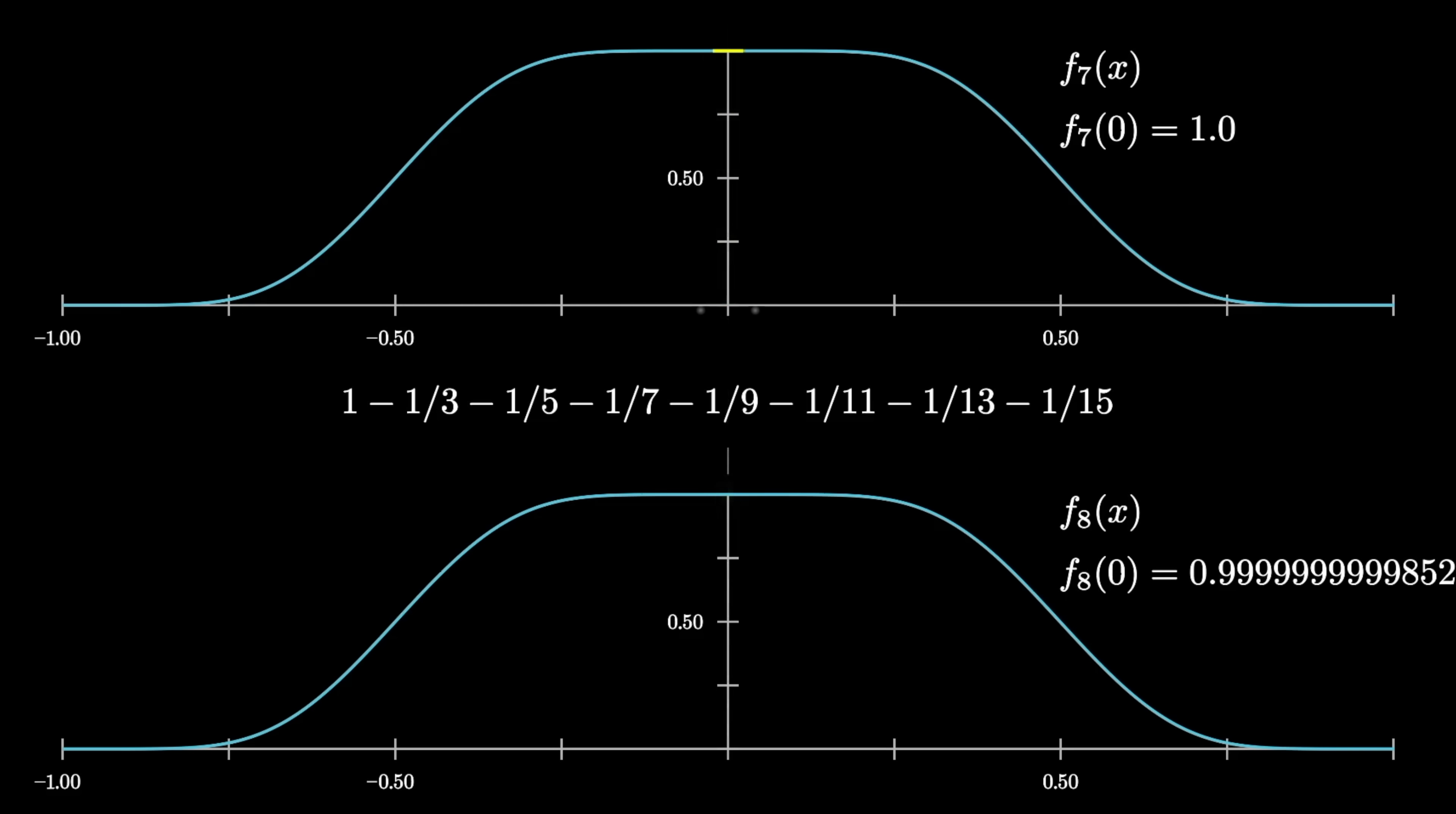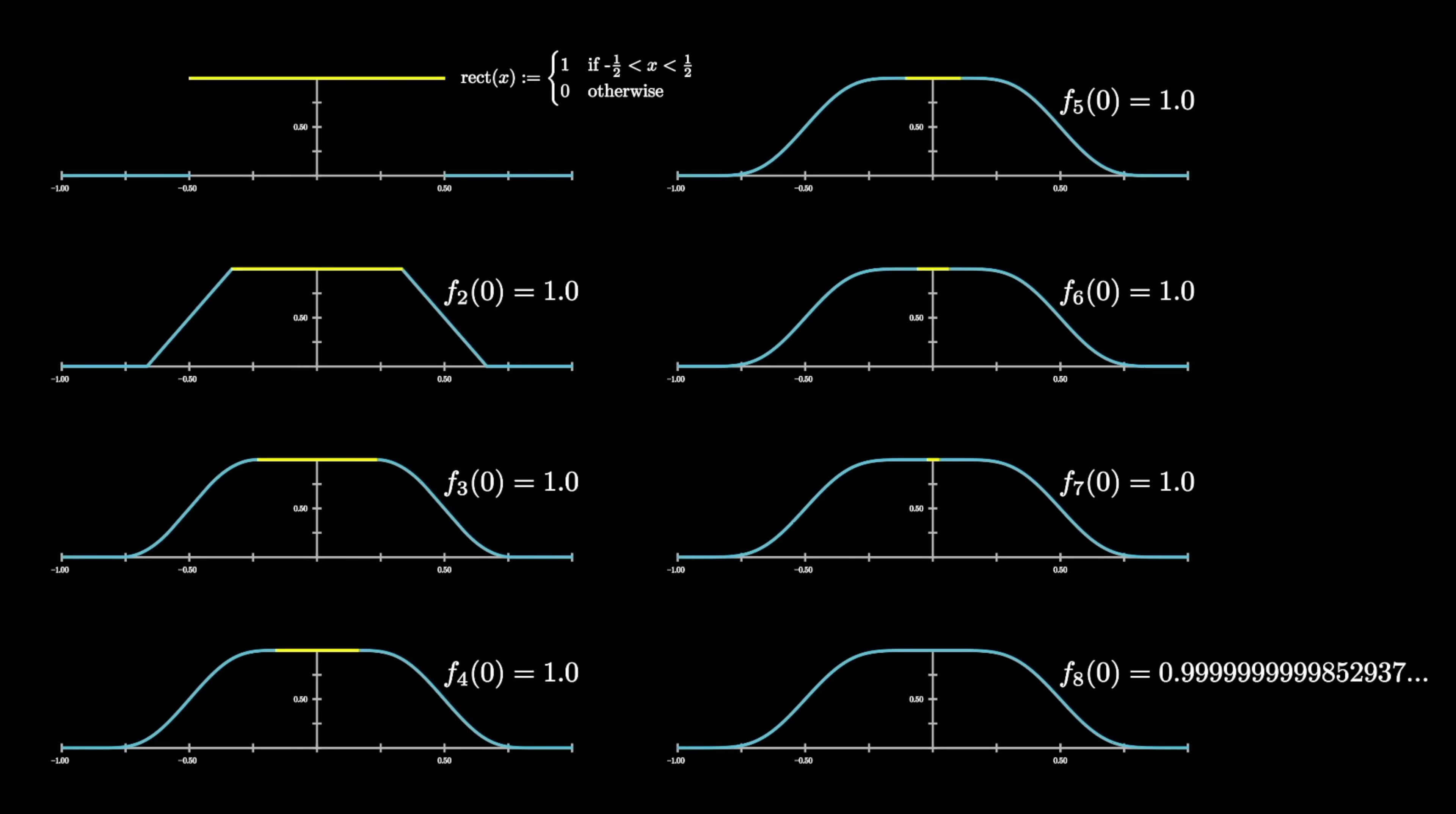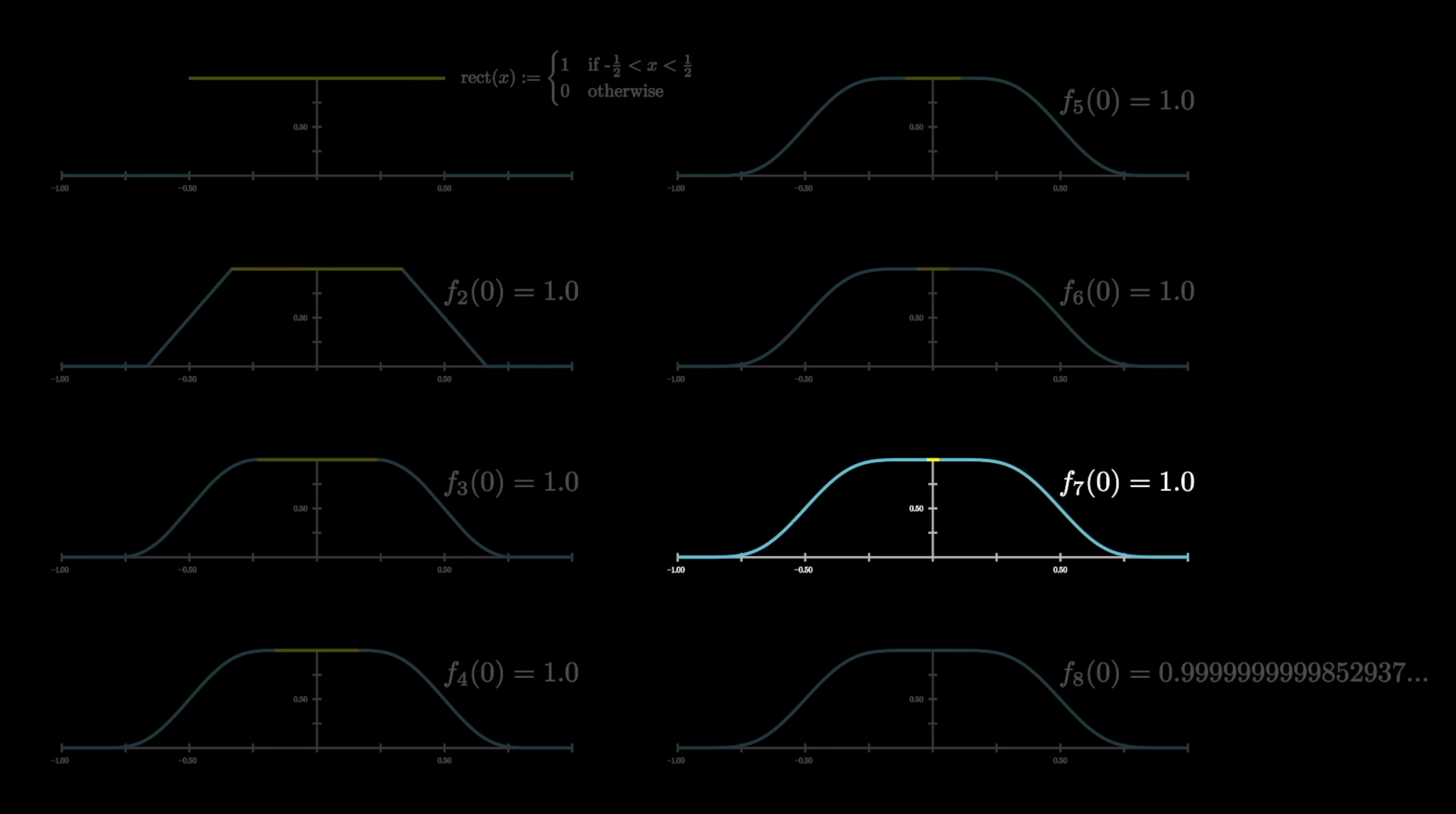The point is, with this as a sequence of functions that we've defined by a seemingly random procedure, if I ask you to compute the values of all of these functions at the input 0, you get a pattern which initially looks stable. It's 1, 1, 1, 1, 1, 1, 1. But by the time we get to the eighth iteration, it falls short ever so slightly, just barely.